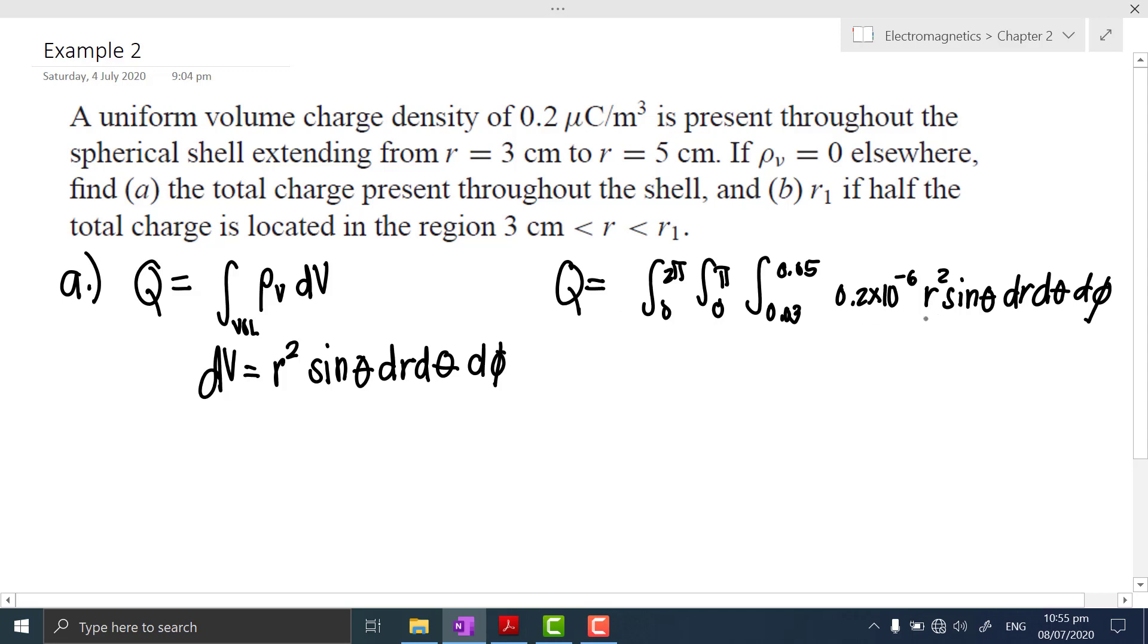Since r² and sin θ are two separate functions, we can express this triple integral as a product. So, factoring out the constant, then multiplying by, let's start with r² dr from 0.03 to 0.05, multiply by for θ we have sin θ dθ integrated from 0 to π, and we have the integral of dφ from 0 to 2π.